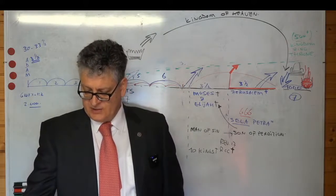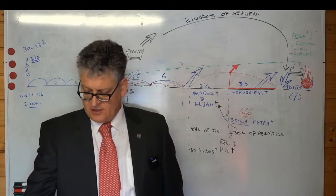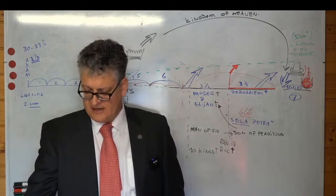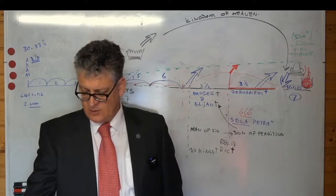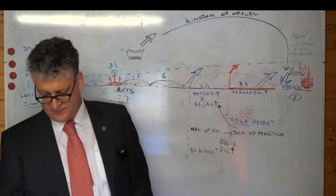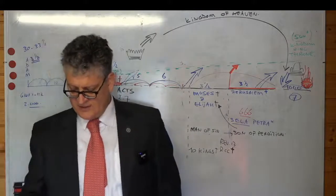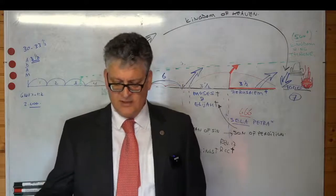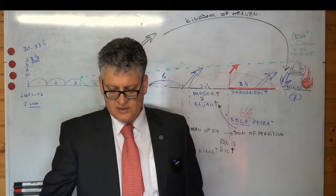These are the two olive trees and the two candlesticks standing before the God of the earth. If any man will hurt them, fire proceeded out of their mouth and devoured their enemies. These have power to shut heaven that it rain not in the days of their prophecy, and have power over waters to turn them to blood, and to smite the earth with all plagues as often as they will.